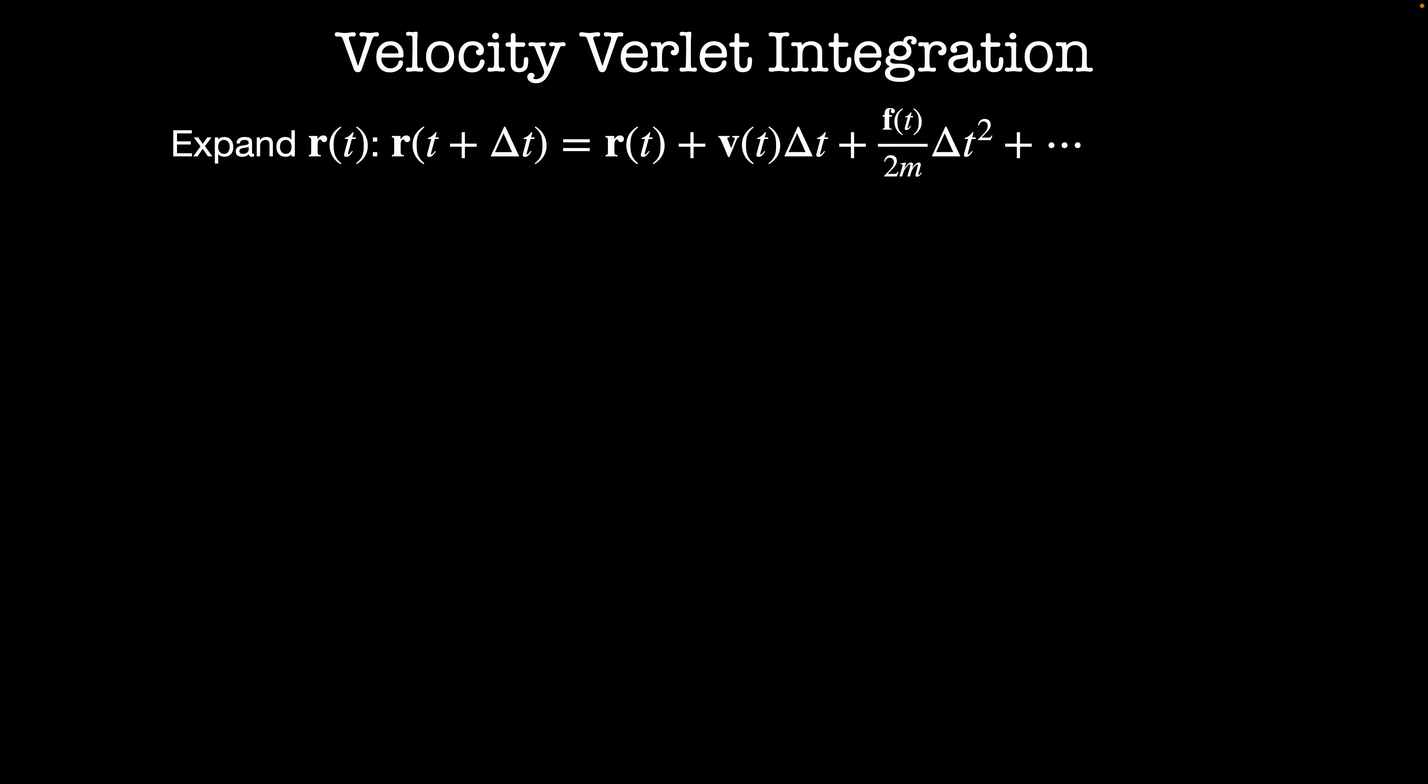First, we'll write down a couple of identities that we'll use throughout the integration. We'll begin by isolating the velocity term by combining the expressions r(t + Δt) and r(t - Δt). Their difference gives me twice the velocity as a function of t times delta t.